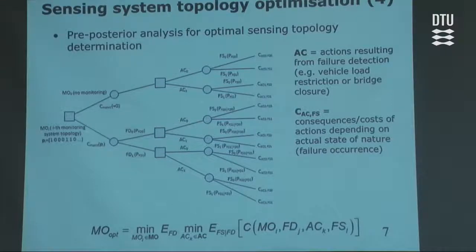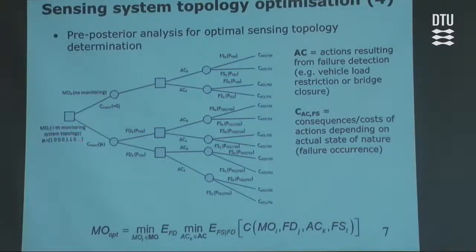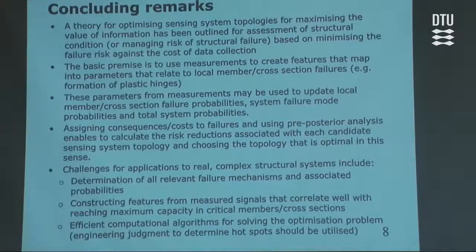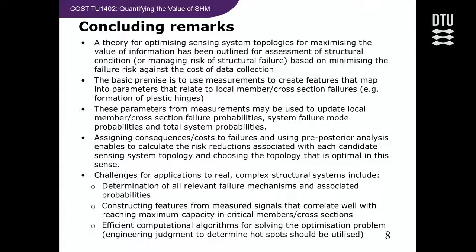A decision tree can then be considered for the pre-posterior analysis. You will have a no-monitoring case, and another decision tree for each candidate monitoring system configuration described by the sensor topology vector. Imagine a stack of decision trees related to different configurations, as shown this morning. Out of all those, you can find the one that minimizes your overall cost or overall risk. So a framework for optimizing sensing system topologies to maximize value of information has been outlined, for assessment of structural condition or managing risk of failure based on minimizing failure risk against the cost of data collection.